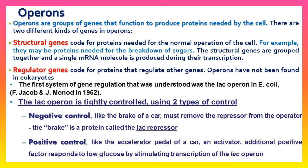Regulatory genes code for proteins that regulate other genes of the operon. Operons have not been found in eukaryotes; they are only found in prokaryotes. The first system of gene regulation that was understood was the lac operon in E. coli, discovered by F. Jacob and J. Monod.